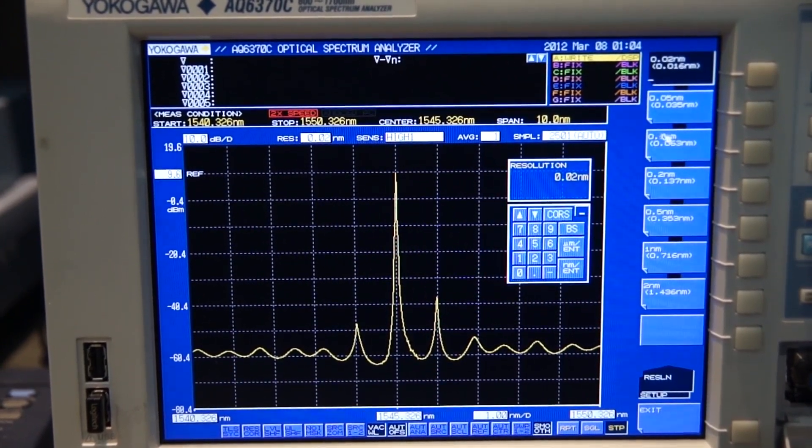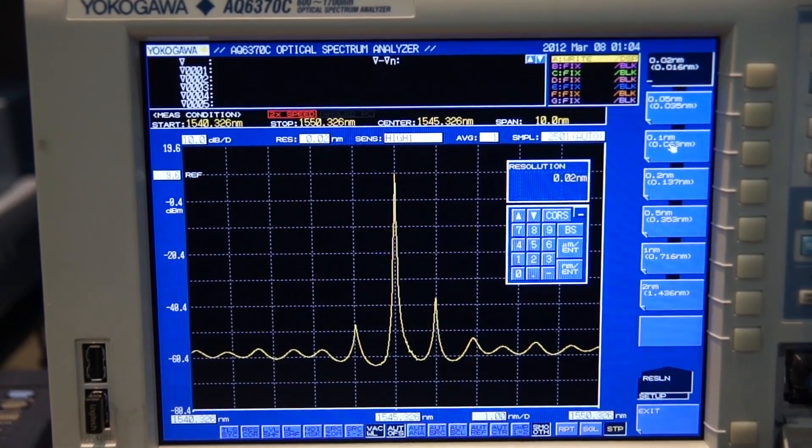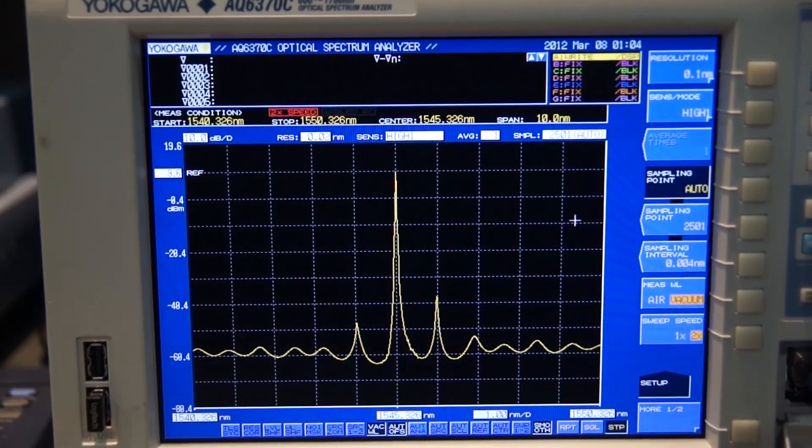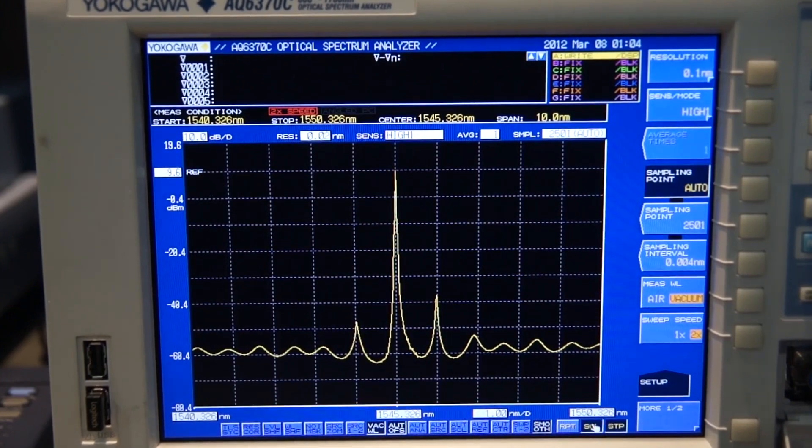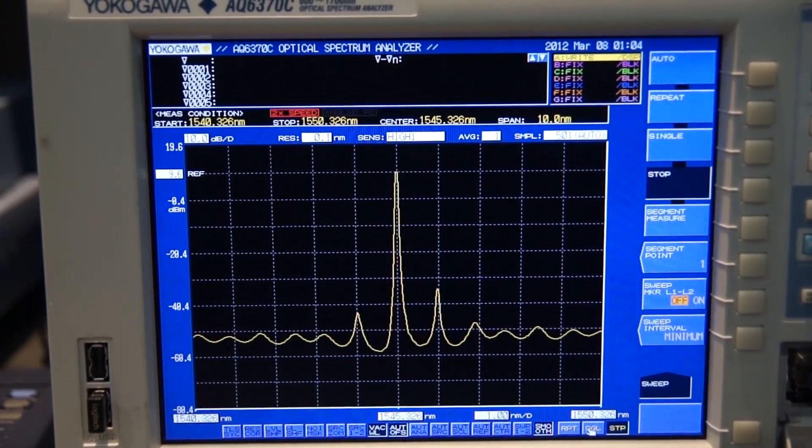Another thing we can do is change the resolution from 0.02 nanometer to about 0.1 nanometer to show how much faster this is going to be with this double speed mode.